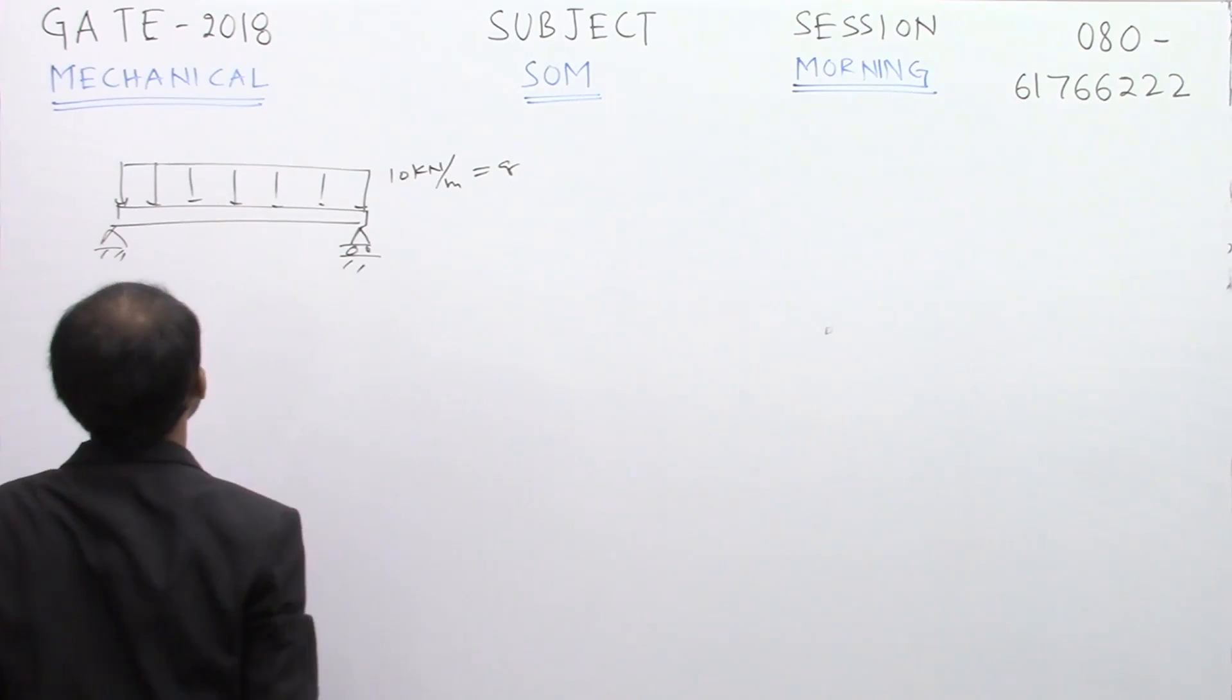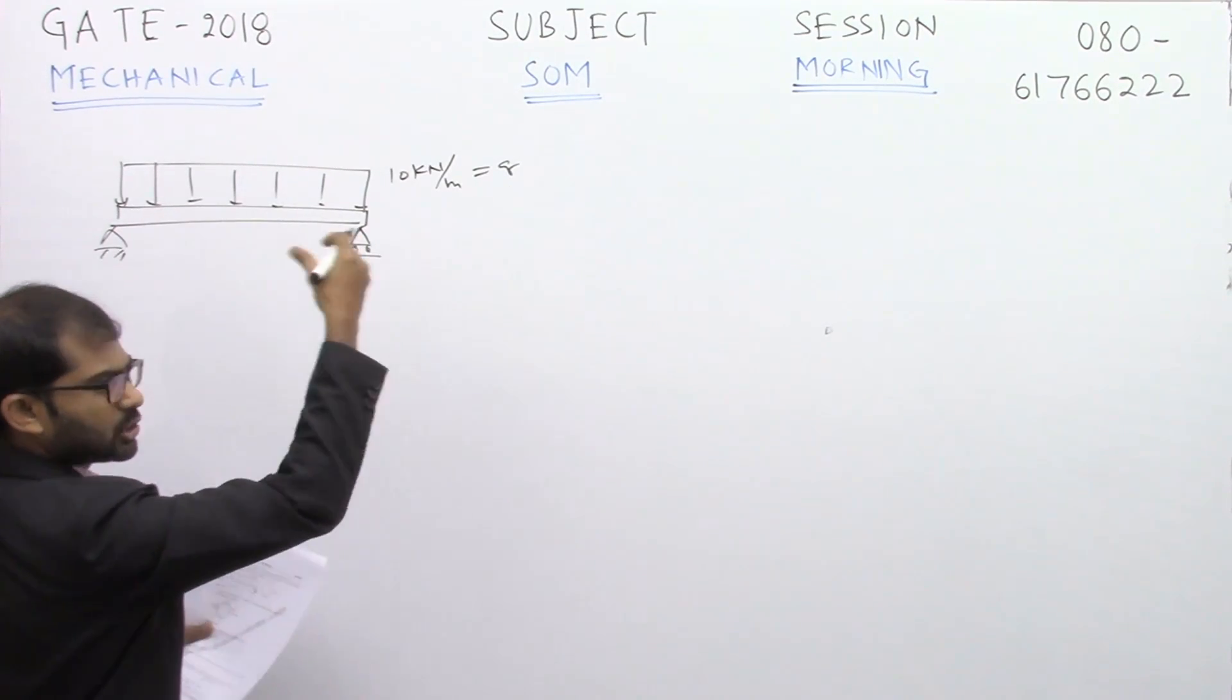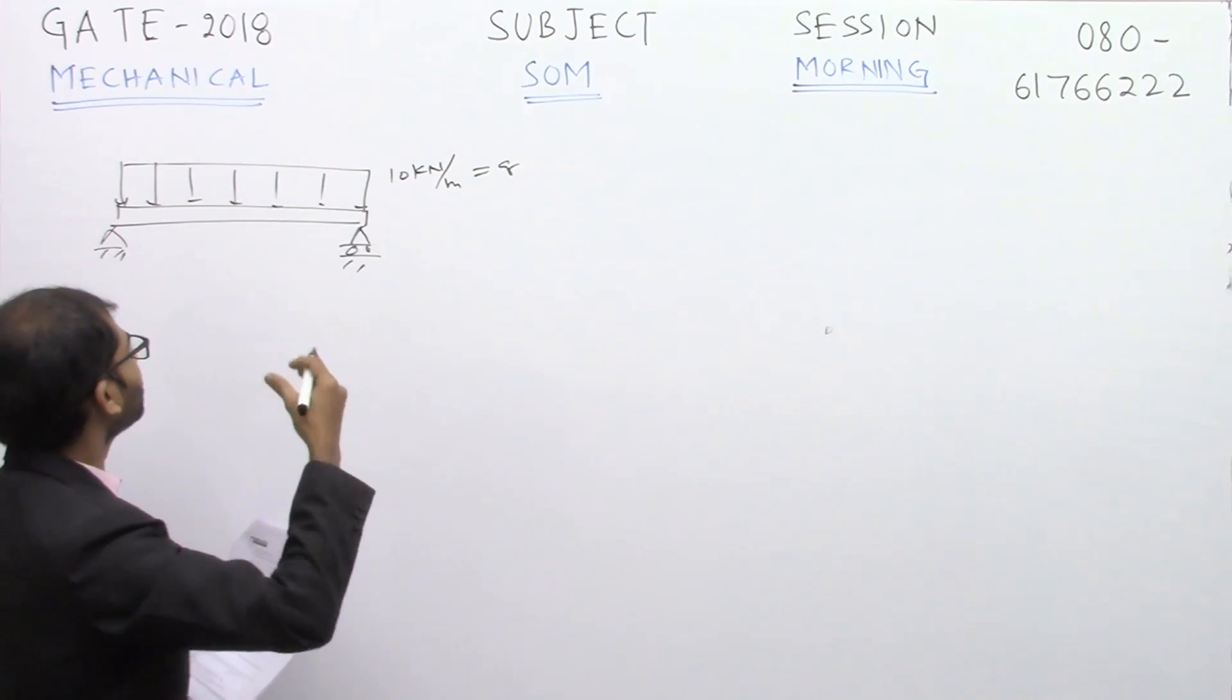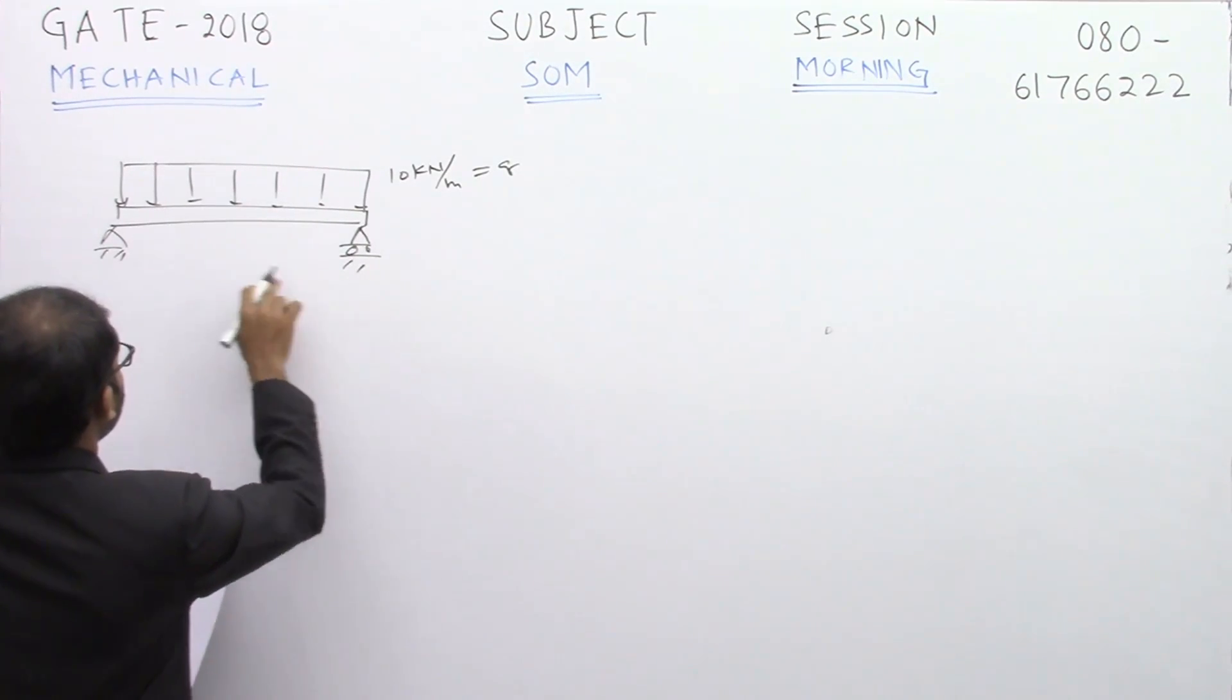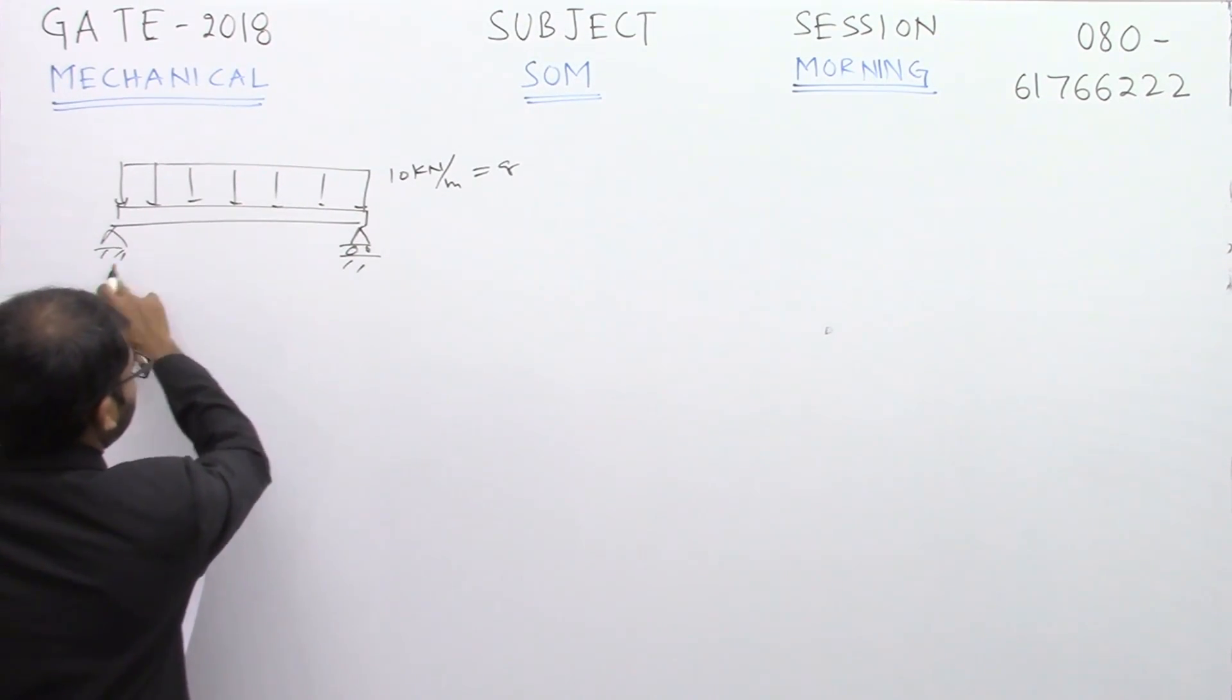This is the load intensity, and we have this load intensity on a beam which is a simply supported beam. A simply supported beam will have a hinged and roller support.